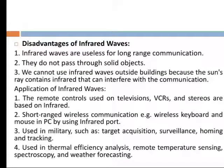Disadvantages of infrared waves: Infrared waves are useless for long-range communication. They do not pass through solid objects. We cannot use infrared waves outside a building because sunlight contains infrared that can interfere with communication. Applications include remote controls for televisions and stereos, short-range wireless communication, wireless keyboards and mice via infrared port, military uses such as target acquisition, surveillance, homing and tracking, thermal efficiency analysis, room temperature sensing, spectroscopy, and weather forecasting.